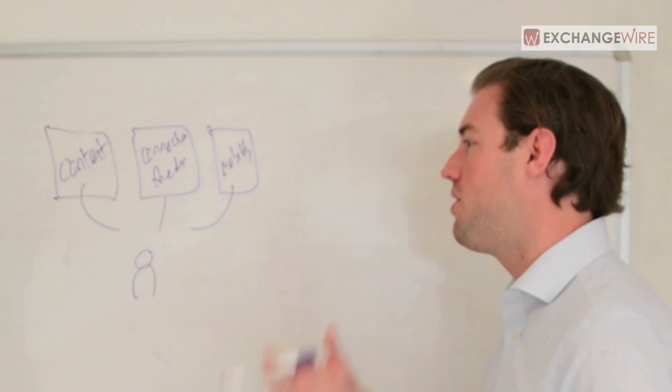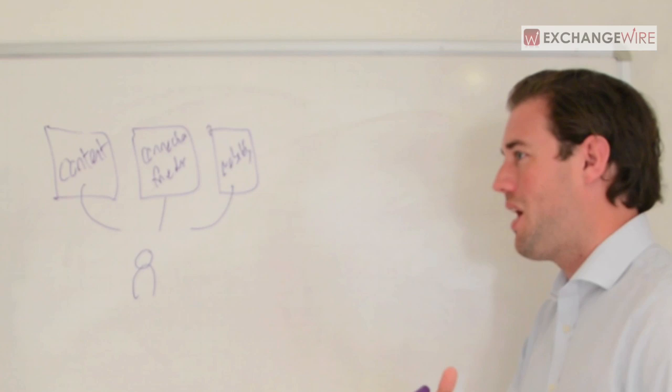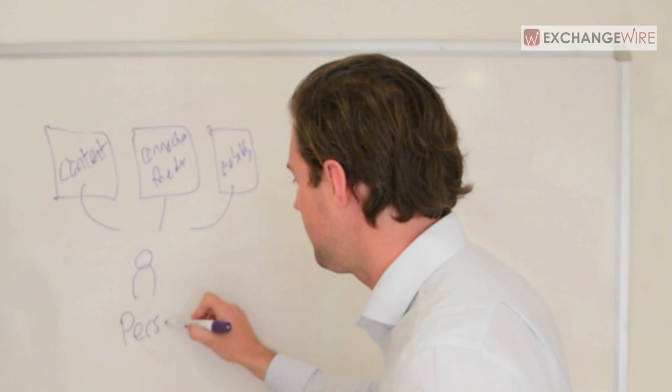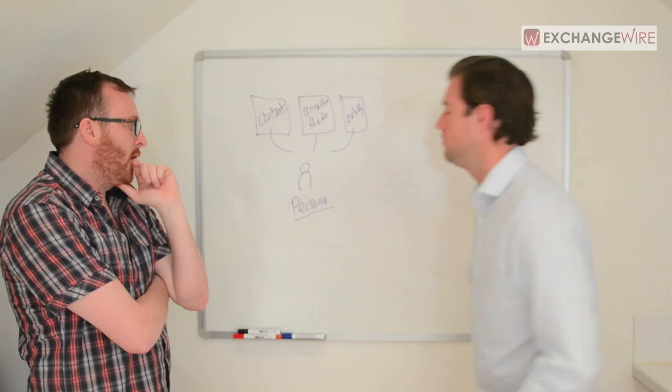And now we can score that user based on all the data we have available on them against our advertising pool and say which brand is this user most relevant for. That's the first thing that we do is to determine who the most relevant user is. And we call this Persona. This is basically our decision engine.